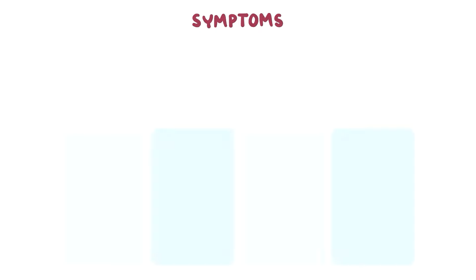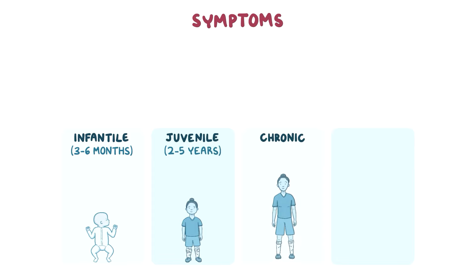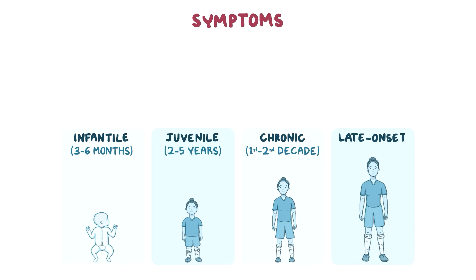Depending on age of onset, TSD can be infantile, with onset at 3–6 months; juvenile, with onset at 2–5 years; chronic, with onset in the first or second decade of life; and late onset, with the first indication of symptoms in the second to third decade of life.